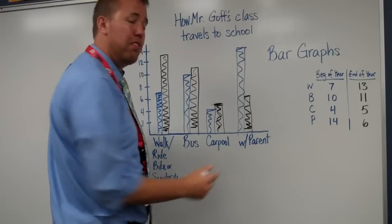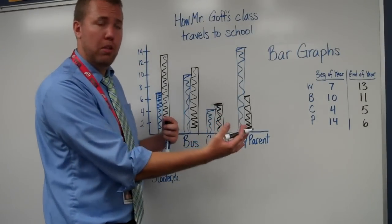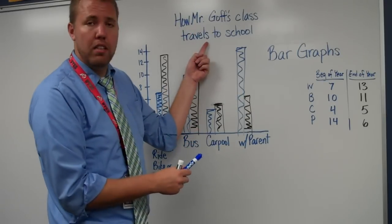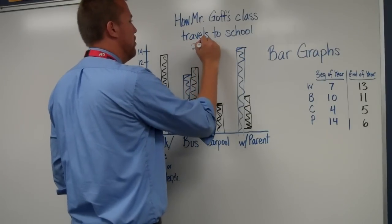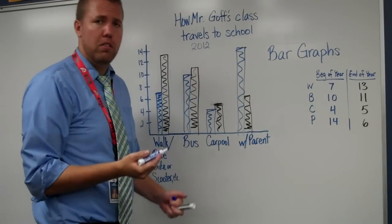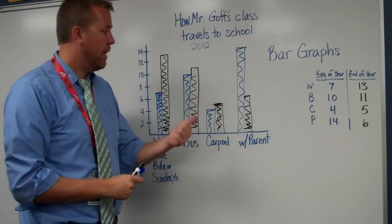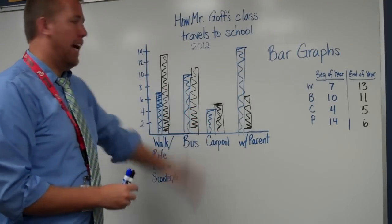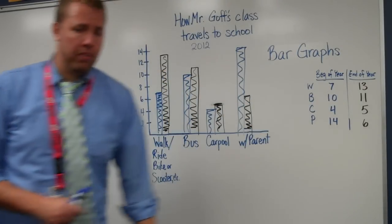That's a double bar graph comparing the same items with two different groups or different times. I would also have to put this in the title: 'How My Class Travels to School — the 2012 School Year.' So those are bar graphs. A single bar graph is just in the blue, and the double bar graph adds another color and new data that we've collected.